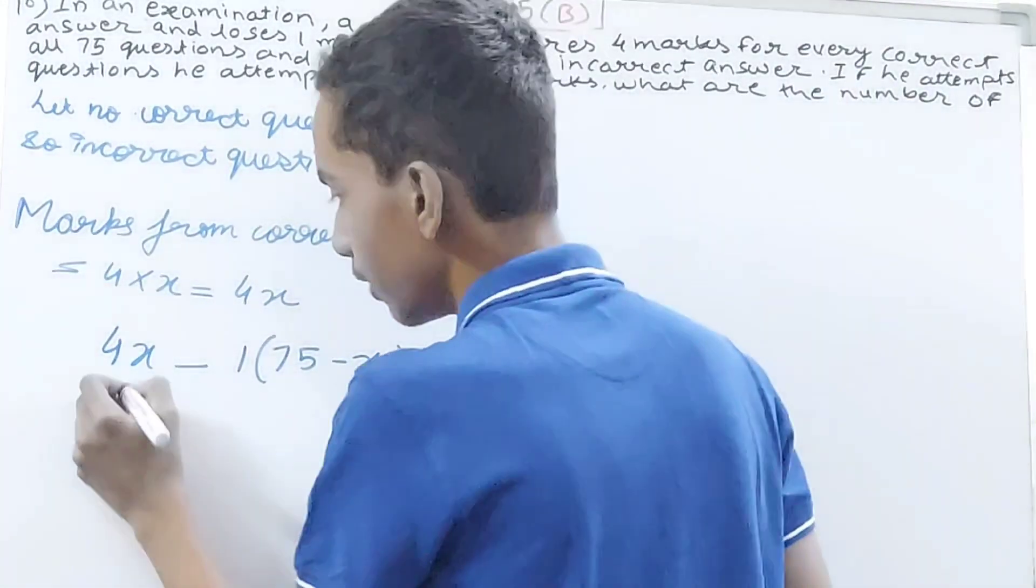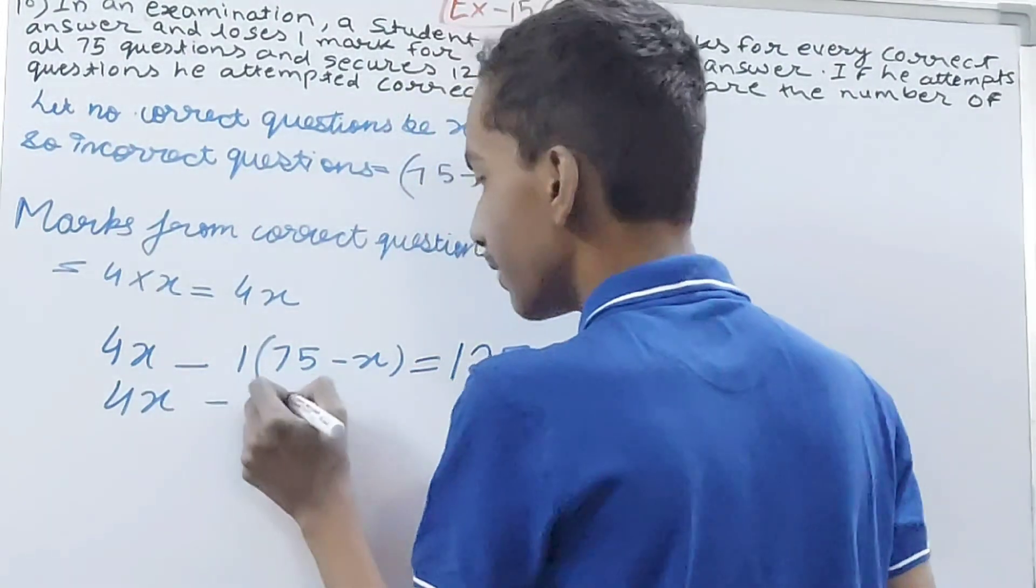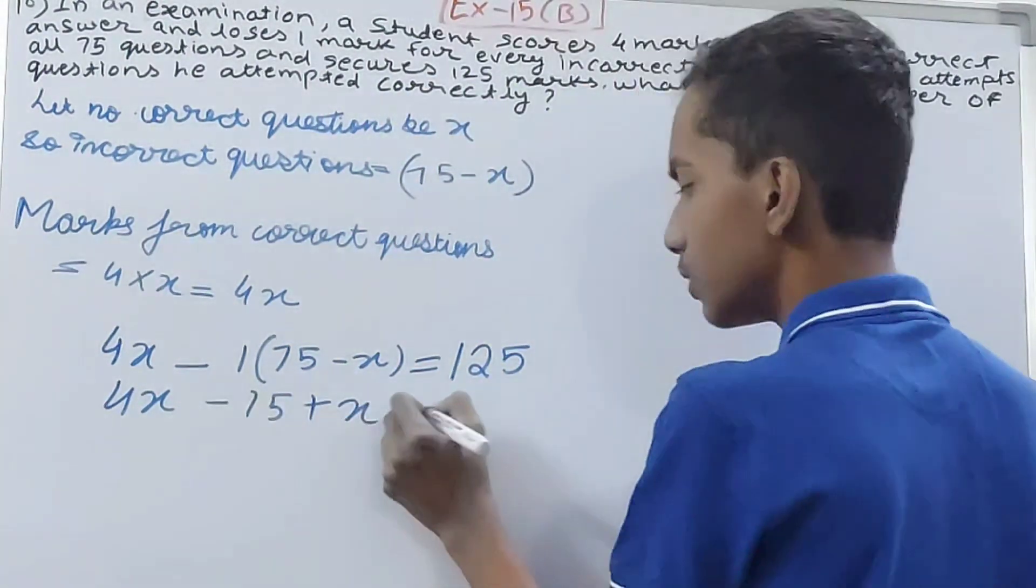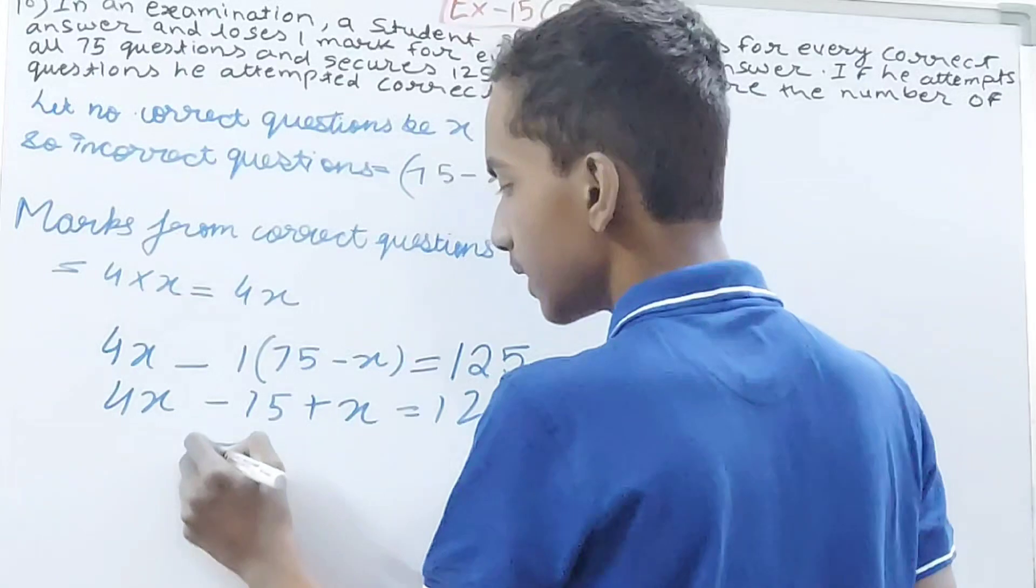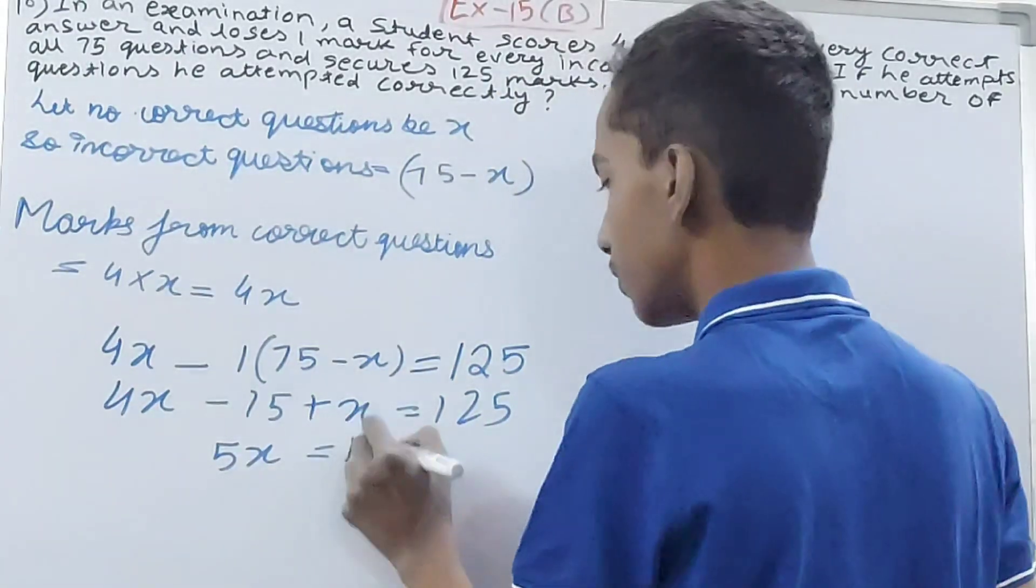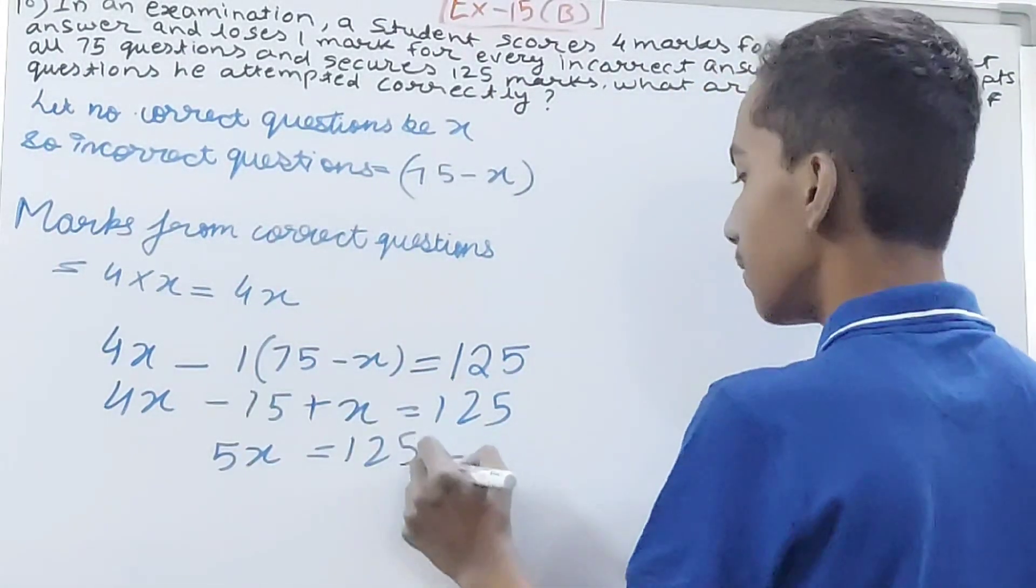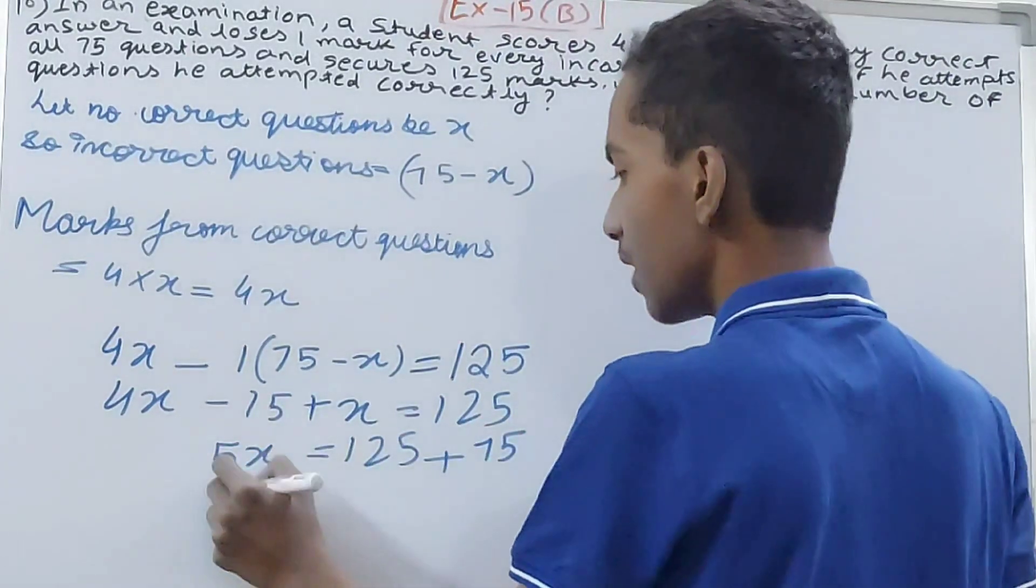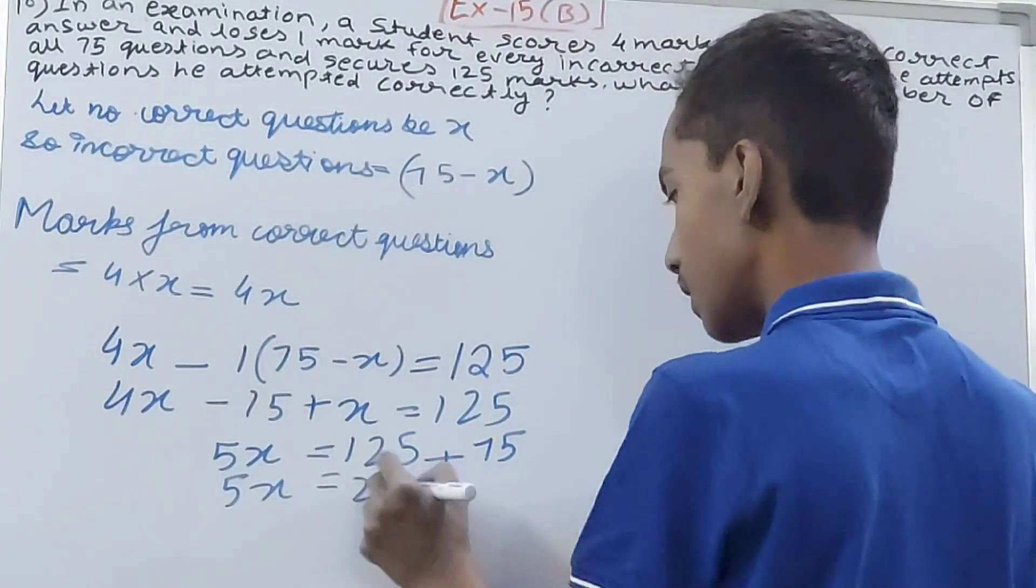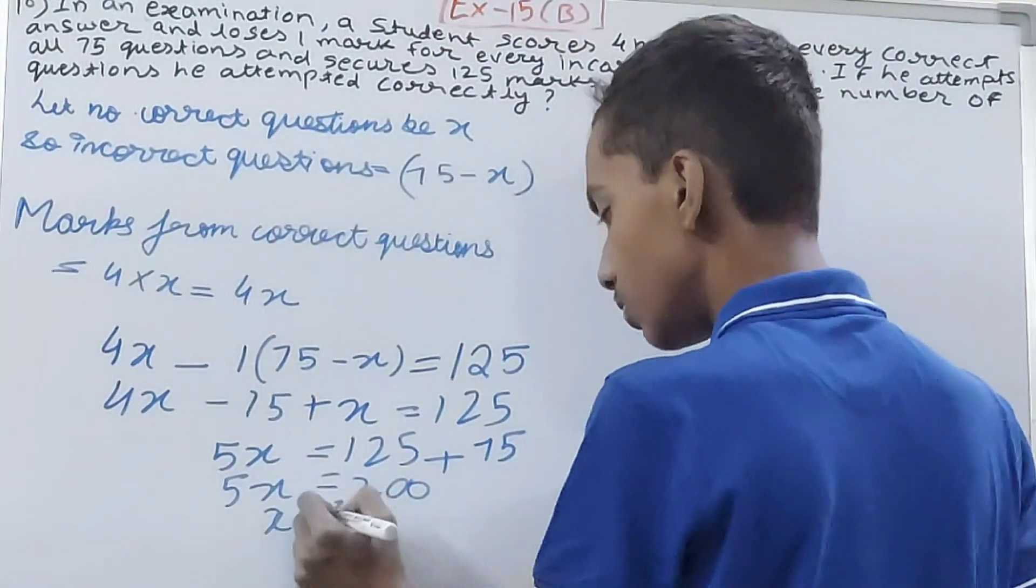So let's quickly open this bracket: 4x minus 75 plus x equals 125. So 4x plus x is 5x, equals 125—minus 75 will become plus 75—5x equals 200. So your x equals 200 by 5, therefore x is equal to 40.